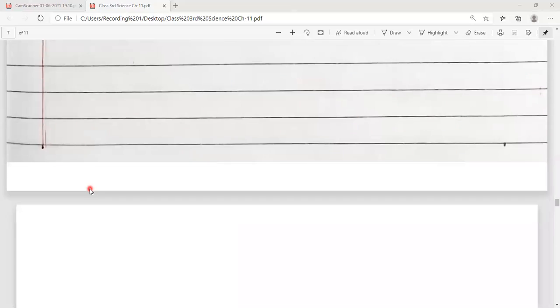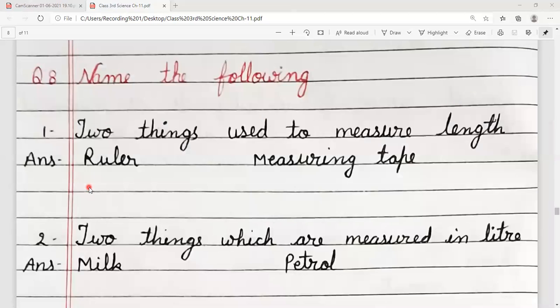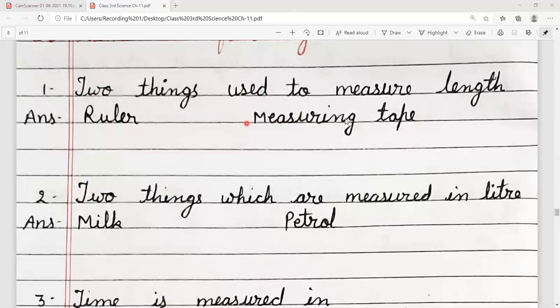Next is name the following. Question number eight, name the following. Two things used to measure length. Koi se bhi two things likhni hain, jis se hum length ko measure karte hain. Ruler and measuring tape.